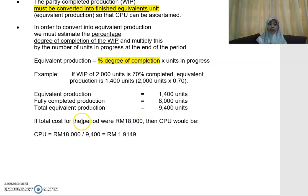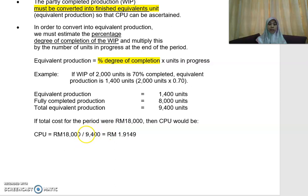If you need to determine the cost per unit, and let's say the total cost for that particular period is 18,000 — then 18,000 will be divided by 9,400 equivalent units, giving you the cost per unit.